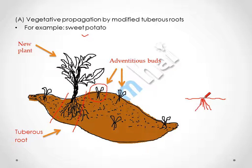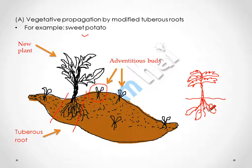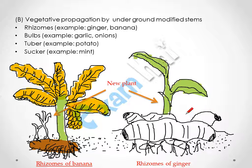This is the upper part of the plant. After some time, when this plant matures, it will develop the sweet potato fruit in the root. Next is vegetative propagation by underground modified stem. In this, there are four types: rhizome, bulbs, tuber, and suckers.